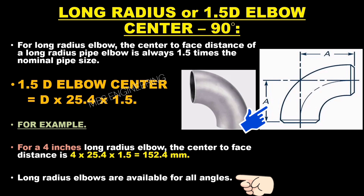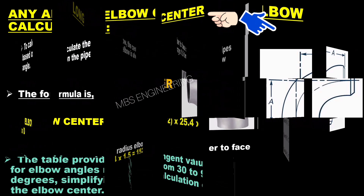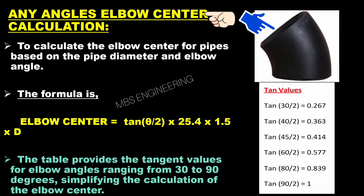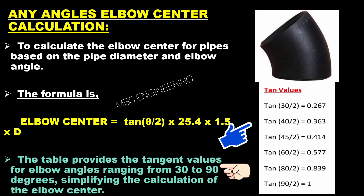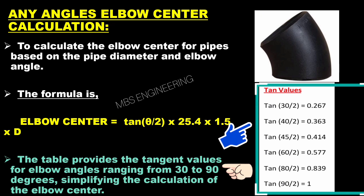Long radius elbows are available for all angles. To calculate the elbow center for any angle, the formula is: Elbow Center = tan(θ/2) × 25.4 × 1.5 × D, where θ is the elbow angle and D is the elbow diameter in inches. A table provides tangent values for elbow angles ranging from 30 to 90 degrees, simplifying the calculation.